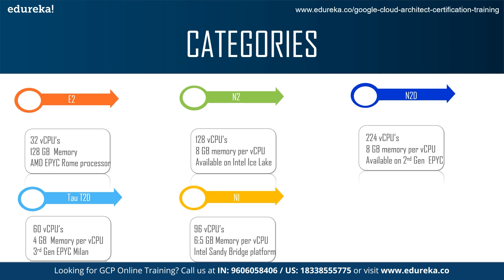The first category is the E2, which has around 32 virtual CPUs, 128 GB memory, and uses the AMD EPYC Rome processor. The N2 has around 128 virtual CPUs, 8 GB memory per virtual CPU, and is available on Intel Ice Lake. The N2D has 224 virtual CPUs, also 8 GB memory per virtual CPU, and is available only on the second-generation EPYC.